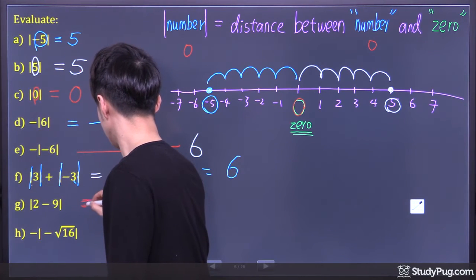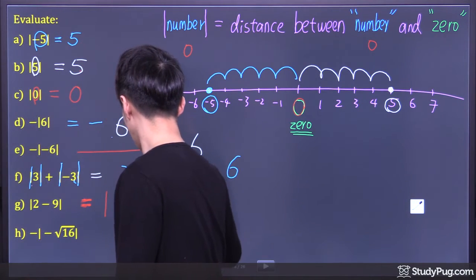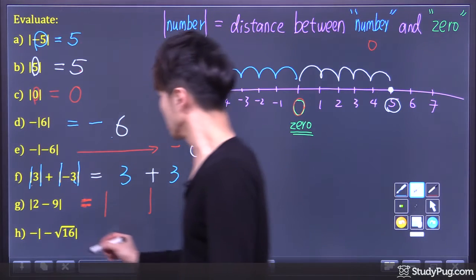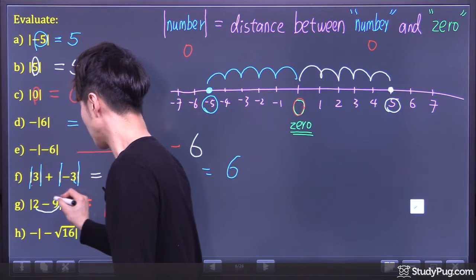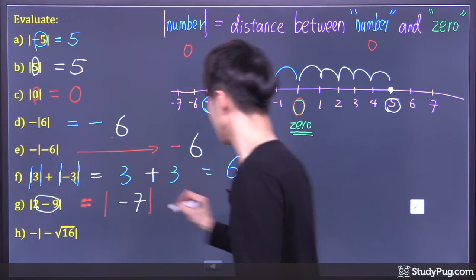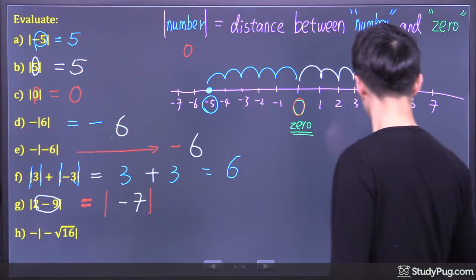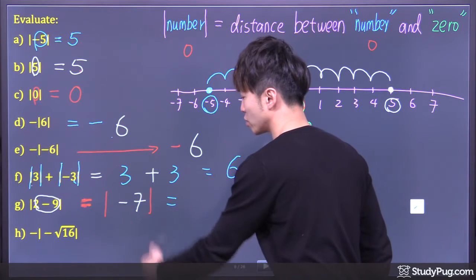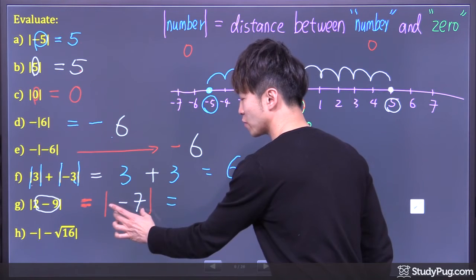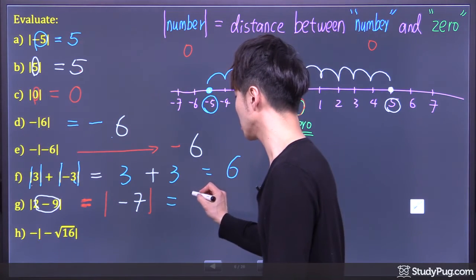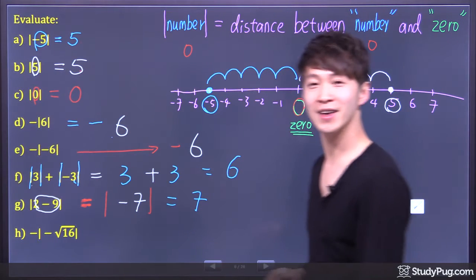Next, we have absolute value of an expression. Inside the absolute value, we have 2 minus 9. What's 2 minus 9? Negative 7. Now, the absolute value of a negative number will give us a positive answer. So the answer is positive 7.